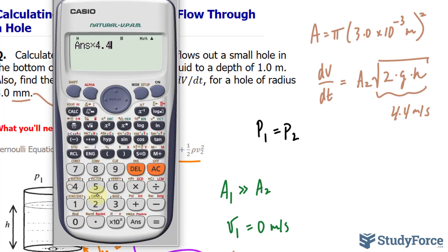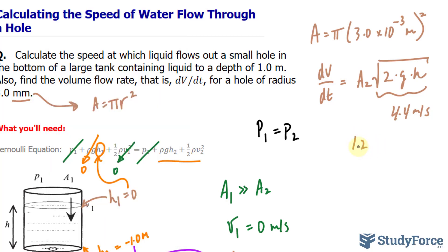So times 4.4 gives us 1.24 or simply 1.2 times 10 to the power of negative 4 meters cubed per second.